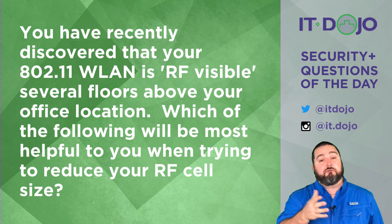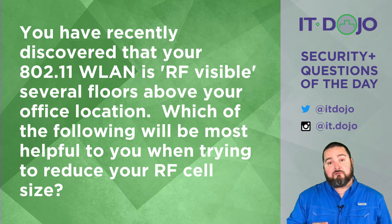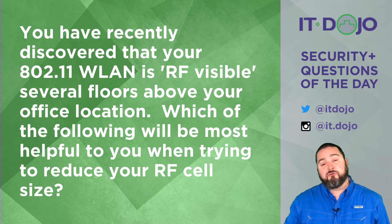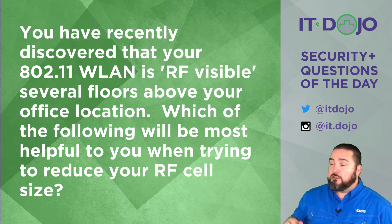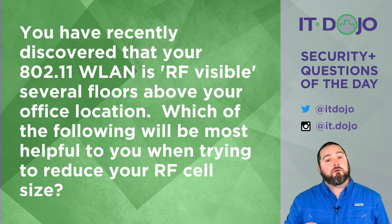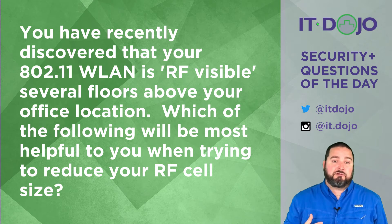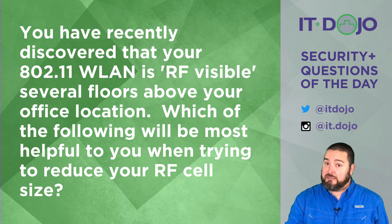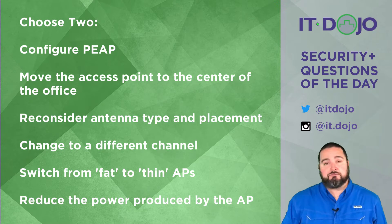Here's your question. You have recently discovered that your 802.11 wireless LAN is RF-visible several floors above your current office location, and that's not right. Which of these items could you employ in order to reduce your RF cell size — reducing the area of coverage — while still providing adequate coverage where you need it? Give those answer choices some contemplation, then click play again.